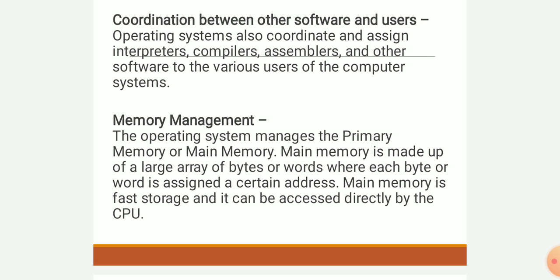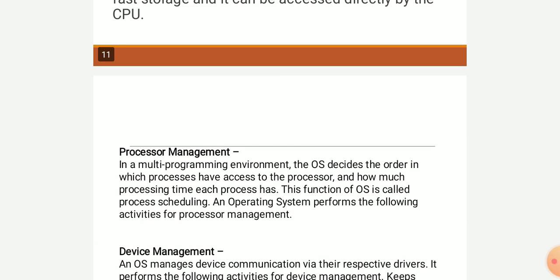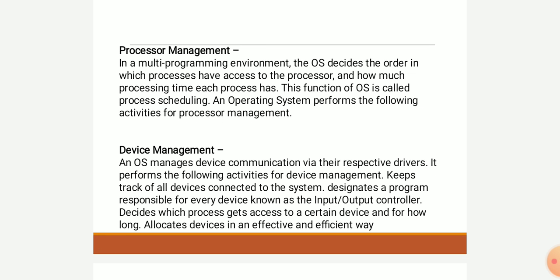Main memory is fast storage that can be directly accessed by the CPU. Process management: in a multi-programming environment, the OS decides the order in which processes have access to the processor and how much processing time each process has — this is called process scheduling. The OS schedules which process gets resources and for how much time.